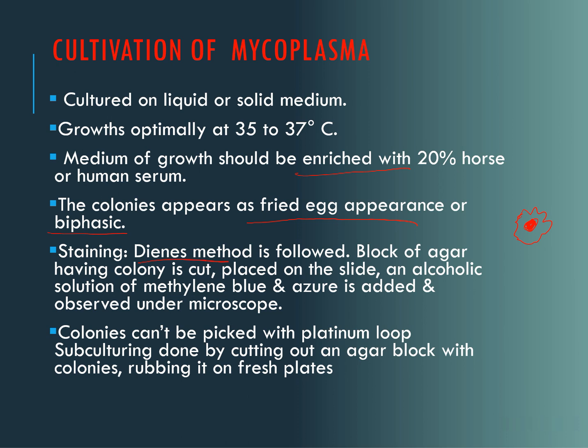For staining, the Dienes method is followed. The block of agar containing the colony is cut out and placed on the slide, then the staining solutions are added and observed under the microscope. The colonies cannot be picked with the help of a platinum loop. Subculturing is done only by cutting out an agar block with colonies and rubbing it on fresh plates.